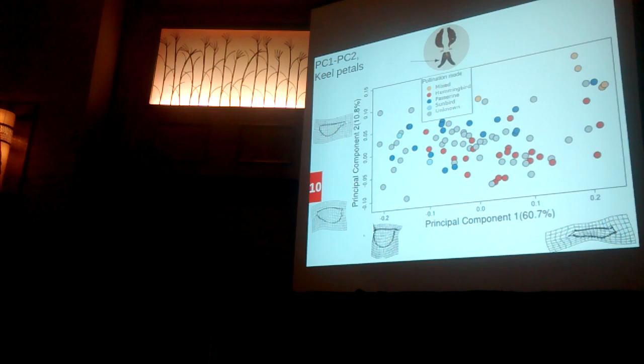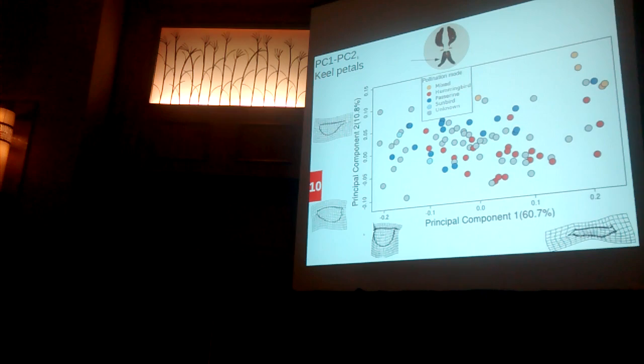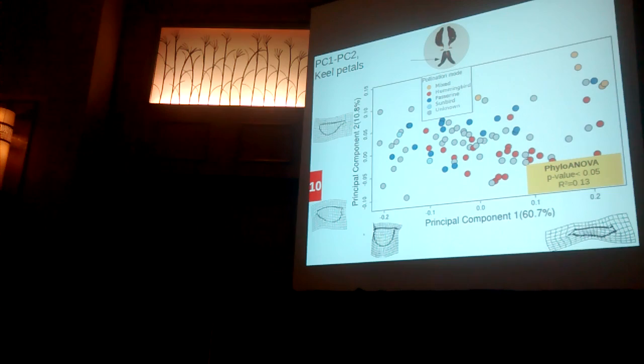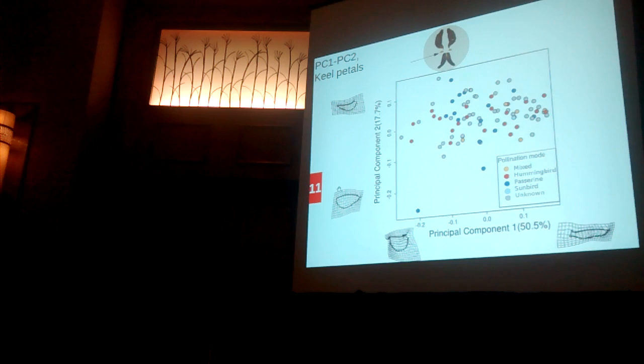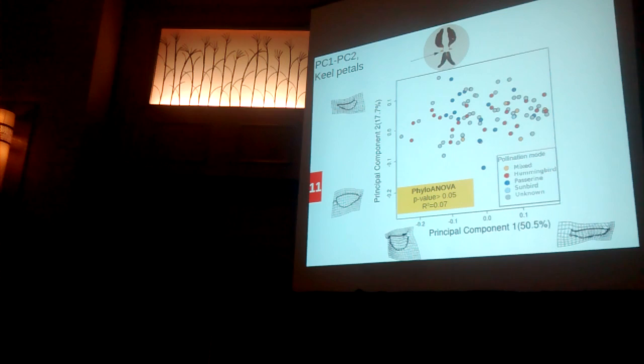Looking at the keel petals, we still see a pattern: hummingbird-pollinated species tend to be on the lower right side of the morphospace and passerine-pollinated species on the upper left. The pattern is less clear, but the phylogenetic ANOVA was still significant, with around 30% of variance explained by pollinators. However, for the wing petals, the pattern is not clear and the phylogenetic ANOVA gave no significant results.